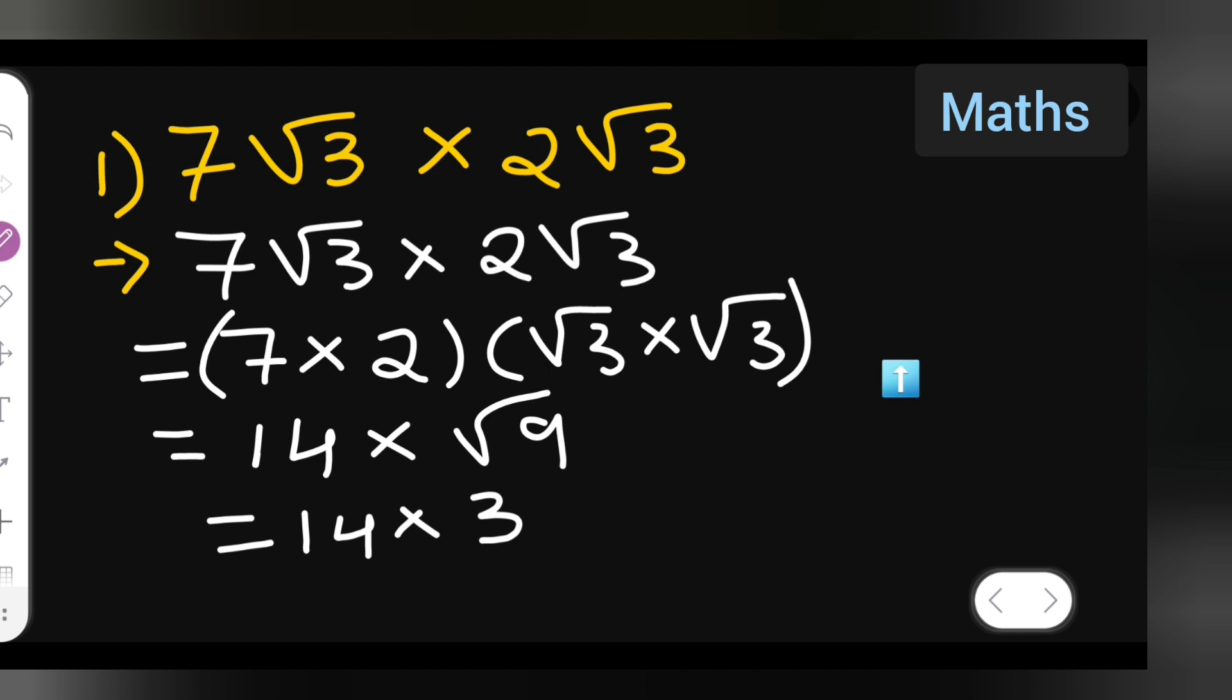So 14 multiplied by what is root of 9? Root of 9 will be 3. So 14 times 3 is what you are going to get. Just multiply here and see: 3 fours are 12, 3 ones are 3, 14 and 2, 42 is your answer.